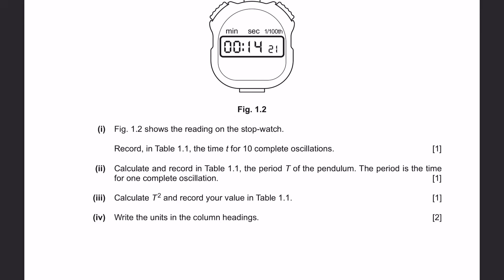Part 1: Figure 1.2 shows the reading on the stopwatch. Record in table 1.1 the time for 10 complete oscillations. For part 2, we are required to calculate and record in table 1.1 the period T of the pendulum — the time for 1 complete oscillation. For part 3, calculate T squared. For part 4, write the units.